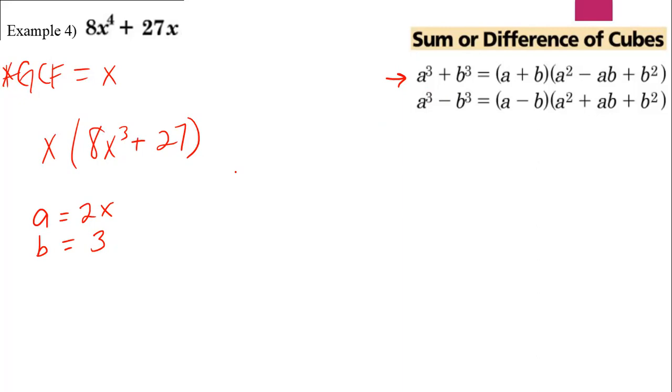So we have 2x plus 3 times 2x squared minus 2x times 3 plus 3 squared plus 3 squared.